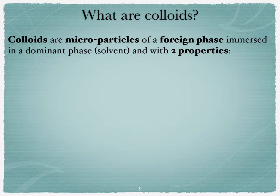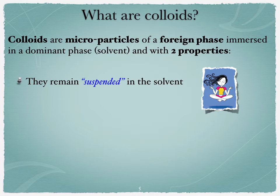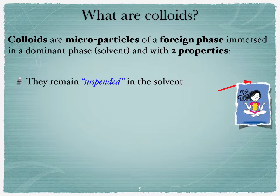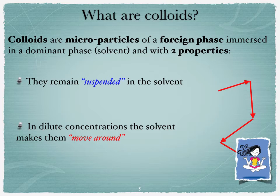So the point here is that to be a colloidal suspension, or for a particle to be a colloid, it needs to satisfy two properties. The first one is that the particles need to remain suspended in the solvent, and the second one is that they need to be moving around in the solvent if they are diluted enough in concentration. Now, to be more specific, the suspended aspect of the colloid means that they do not sediment—they do not accumulate either at the top of your substance or at the bottom, if you will.